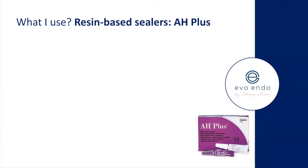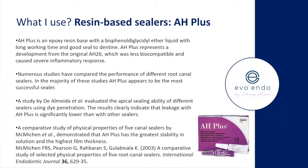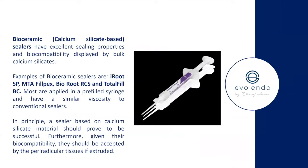I'm transitioning to bioceramic sealers, but up to about a year ago AH Plus was my go-to, fundamentally because it has the greatest stability in solution — it doesn't have high tissue solubility, so what you obturate on day one will look the same in three to five years. Tubli-seal, by contrast, has poor tissue solubility — you may obturate with a great post-op radiograph and then three to four years later it looks short because the sealer has dissolved.